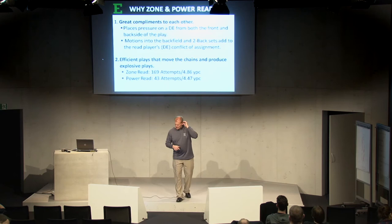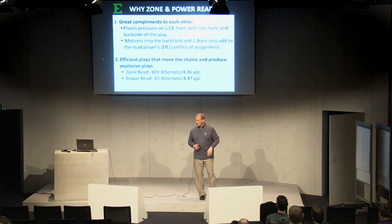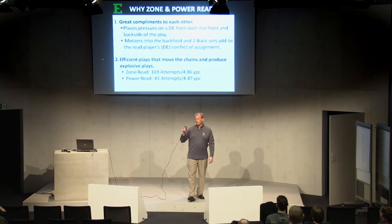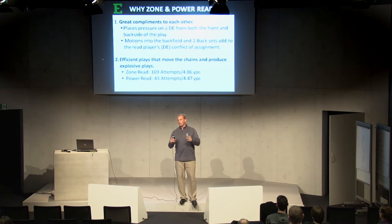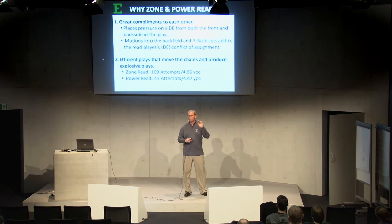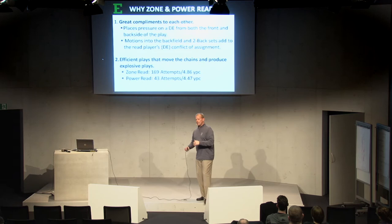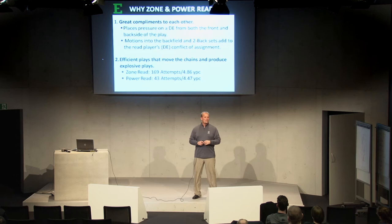I mentioned motions into the backfield and the two-back sets — you can see the efficiency we have with this play. Now that's not a lot of attempts in the power read, and I get that. Here's our situation: our starting quarterback — I mean lightning in a bottle — he can score from anywhere on the field, he was our home run threat. But he got hurt, broke his jaw in the third quarter of our first game. So he was out for six weeks.